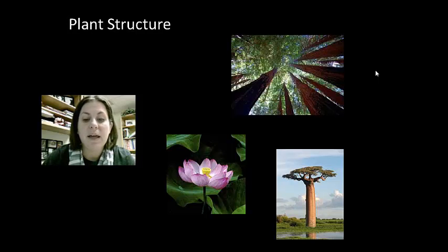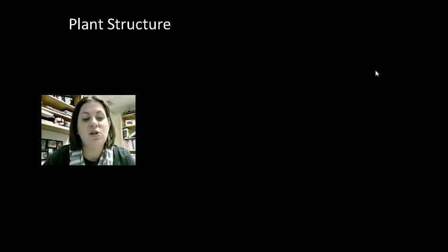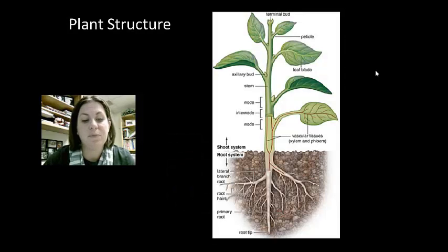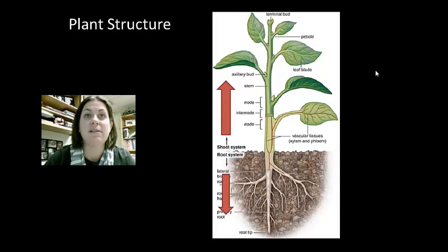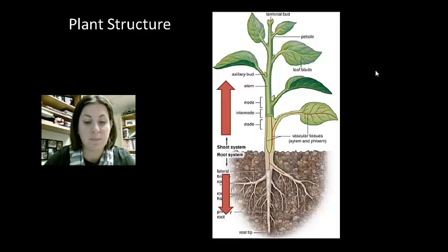A plant's anatomy is divided into two organ systems. We have the shoot system which is above ground, and we have the root system which is below ground.